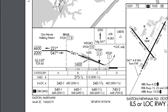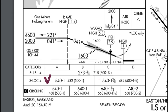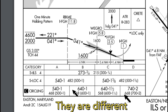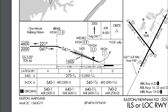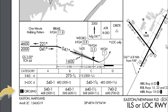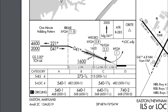Underneath that, looking at the localizer approach, you can see it's broken down by categories A and B, and C and D. In this instance they're the same figures, but you can see how they could differ based on aircraft speed. On the non-precision localizer approach, the MDA — minimum descent altitude — is 540 feet, and we need one statute mile of visibility. The HAT is 482 feet height above touchdown. Below that, the circling approach — another non-precision approach — shows different values for pretty much every category of aircraft.